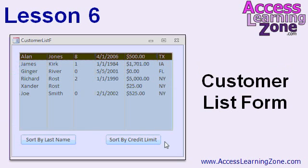In lesson six, we're going to tie everything that we've learned together. We're going to make a customer list form — an unbound form with a list box that has customer information — and we'll make two buttons that will change the way the data is sorted, either by last name or by the customer's credit limit, using dynamic SQL and a little bit of VBA code.